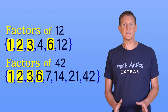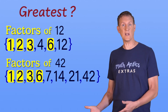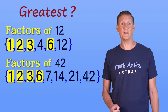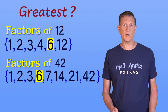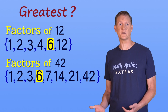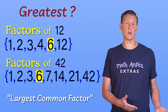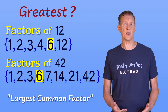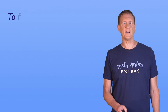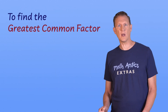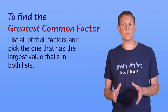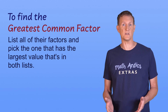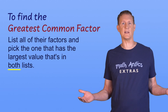But now we can ask: what's their greatest common factor? That would be the number 6, because it's the common factor that has the largest value. Greatest basically just means the largest, so you can think of it as the largest common factor if that helps you remember. So to find the greatest common factor of any two numbers, all you have to do is list all of their factors and pick the one with the largest value that's in both lists. It's as simple as that.